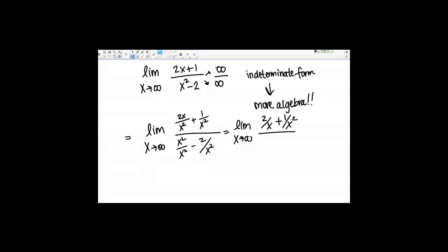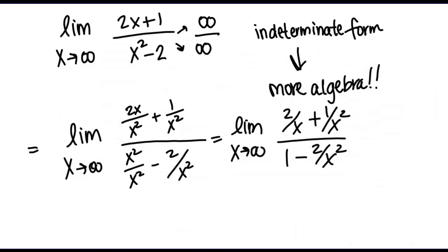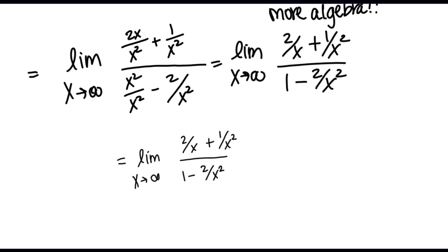And then on the bottom, x squared over x squared is 1 minus 2 over x squared. So now that we've rewritten our expression, we can try to take the limit again. The way we're going to do that is we're just going to think about what happens to each of our terms individually as x goes to infinity, and then we'll get an overall answer.